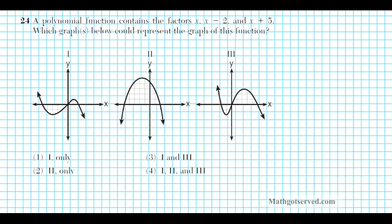Let's take a look at the last multiple choice problem, number 24. It says: a polynomial function contains the factors x, x minus 2, and x plus 5. Which graph could represent the graph of this function? We have three factors, which means we're going to have three roots. Since the factors are dissimilar, we'll have three different roots.